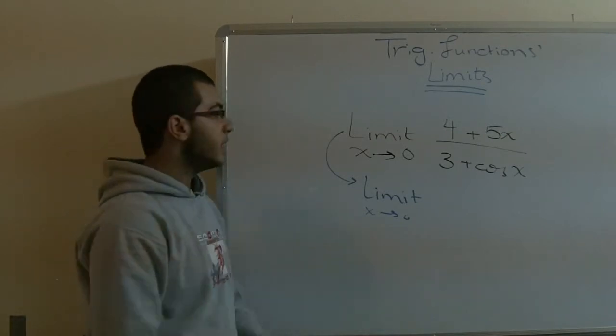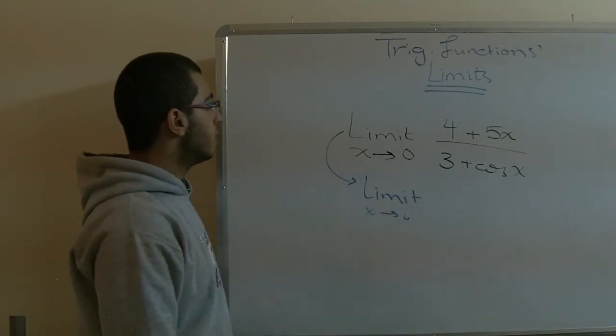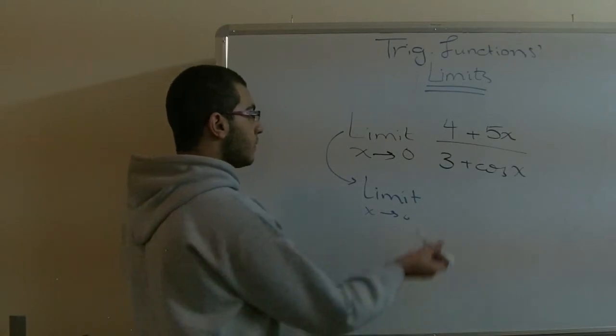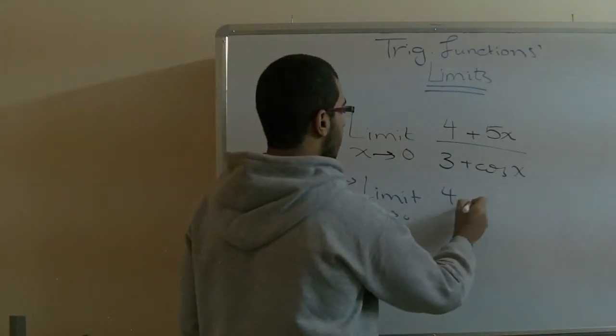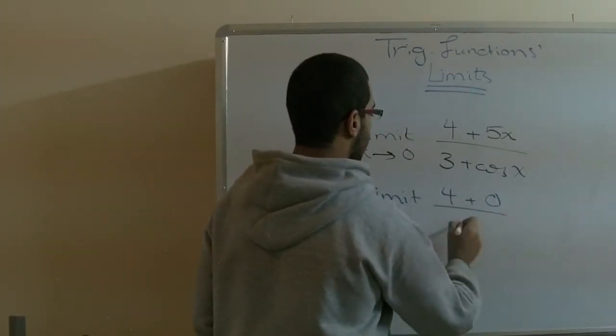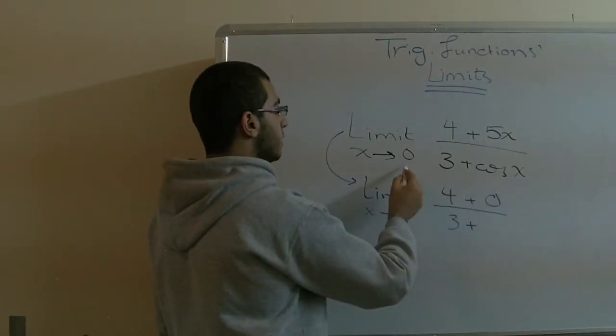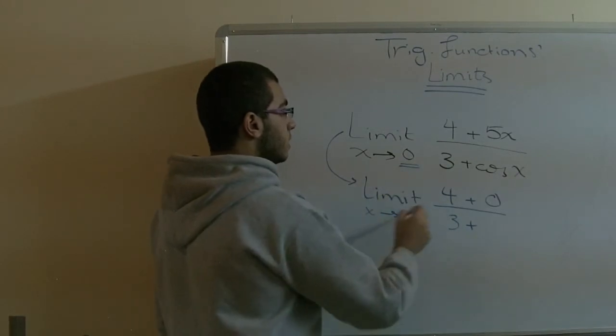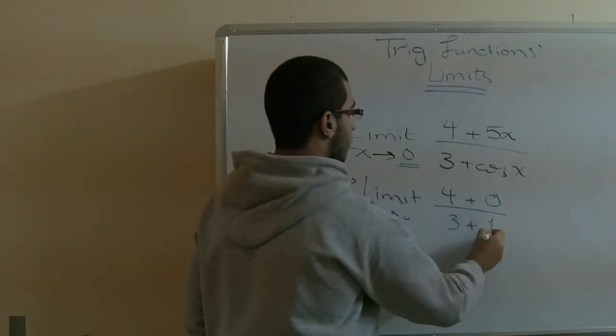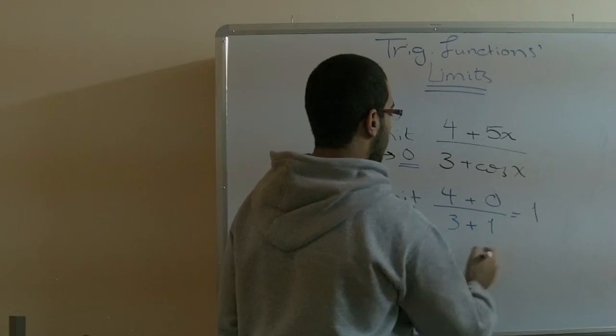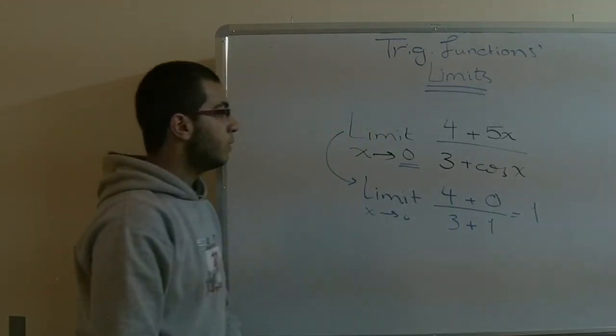So what should I do? We can substitute directly with x approaching zero, so we get 4 plus 0 over 3 plus cosine 0. Cosine 0 gives us 1, so we get 4 over 4. It's solved.